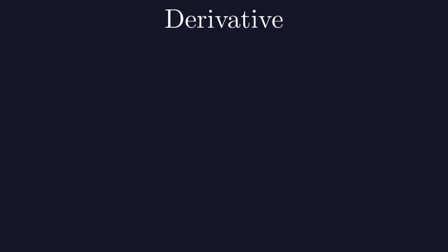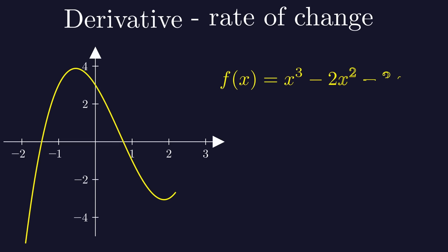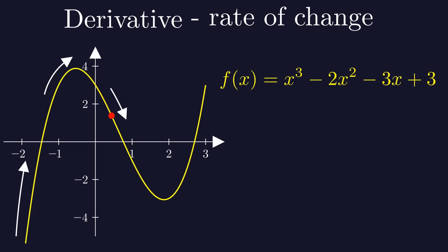To understand Euler's identity and the number e, we first need to know about derivatives. The derivative describes the rate of change of a function at any given point. Let's look at a graph of a function x cubed minus 2x squared minus 3x plus 3. At x equal to minus 2, this function increases rapidly. But as x approaches about minus 0.4, the increase slows down. The growth rate goes to 0, and after this point, the function starts to decrease. That's what a derivative measures. The value of the derivative at any point is also equal to the slope of the line tangent to the graph of the function at that point.